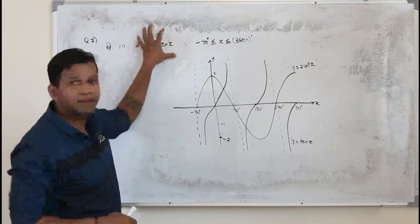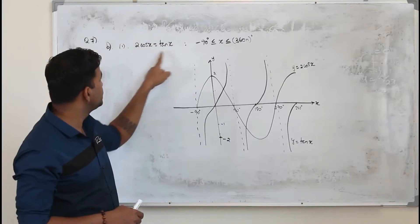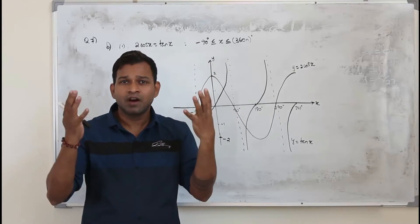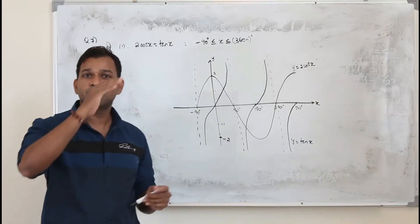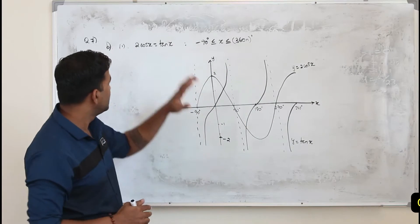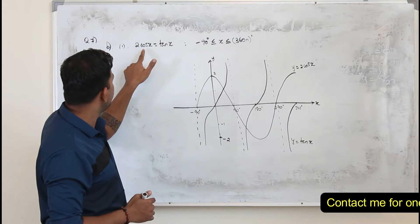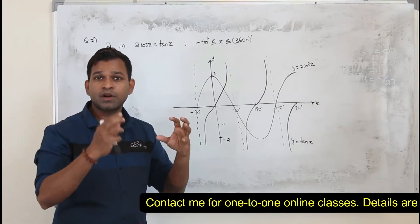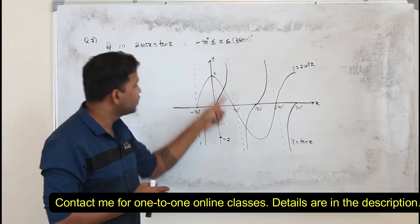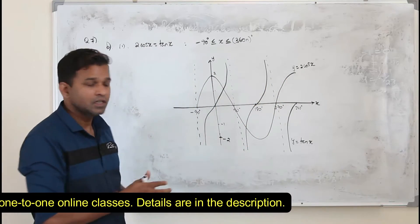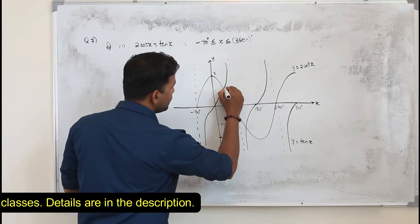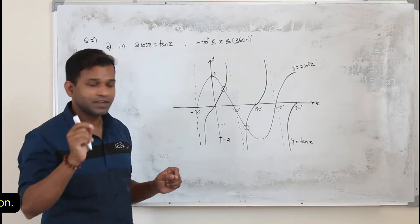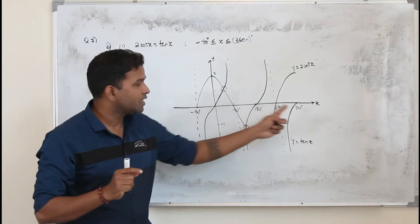They want you to find the total number of solutions of this equation within this interval. When they say 2cos(x) equals tan(x), they are talking about a point of intersection of 2cos(x) and tan(x). So looking at the points of intersection, we have 2 points of intersection between minus 90 and 360.